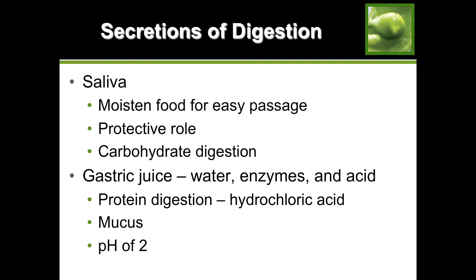Your saliva moistens food for easy passage, plays a protective role with antibiotic properties helping control bacteria in your mouth, and starts carbohydrate digestion - specifically starches. In the stomach, your gastric juice is made of water, enzymes, and acid. Protein digestion starts with hydrochloric acid in the stomach. Your stomach also produces mucus to coat its lining and protect it from the hydrochloric acid. When the mucus is not thick enough or wastes away, this is when you start developing an ulcer.